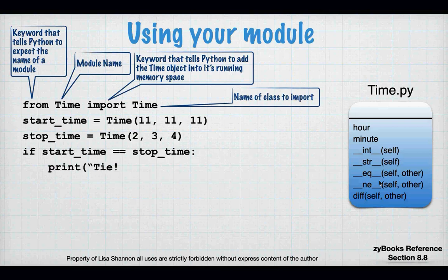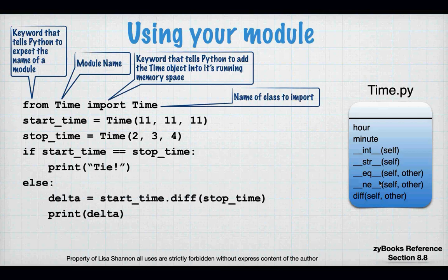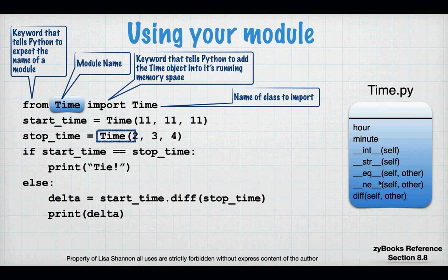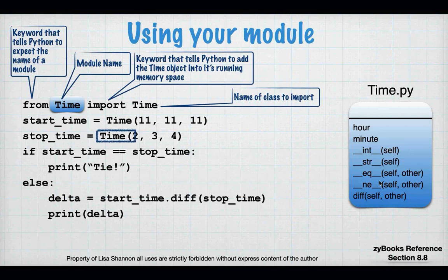So I'm going to create `start_time` and `stop_time`. I'm going to say if `start_time` is the same as `stop_time`, then print `tie`; otherwise, give me a difference and print it. And then you just use it like you would use `time` if it were part of the program.